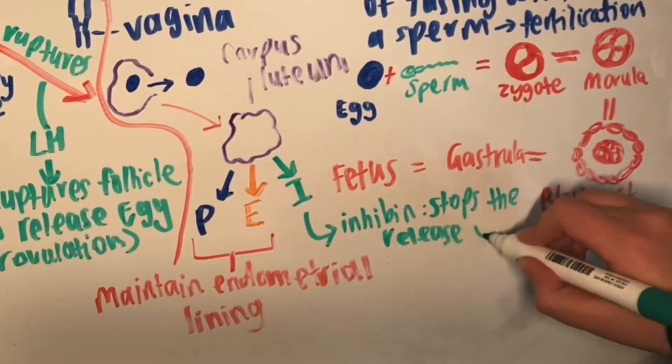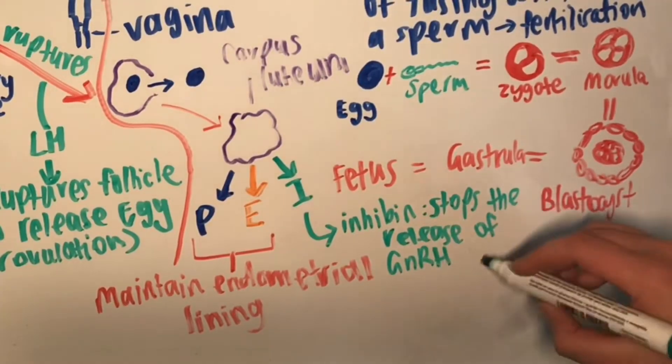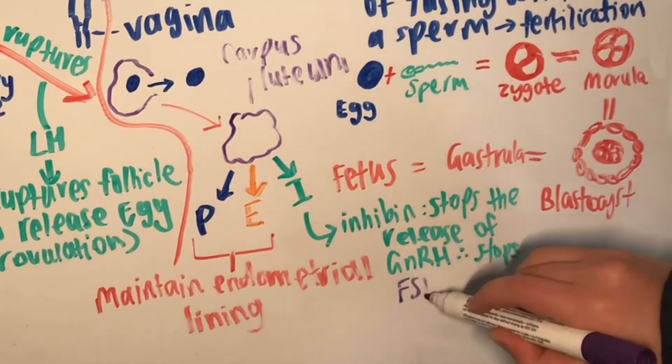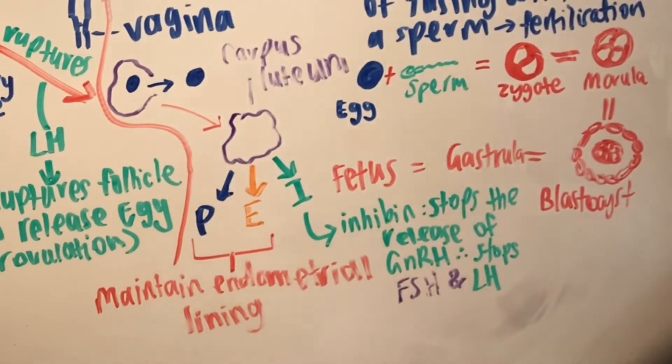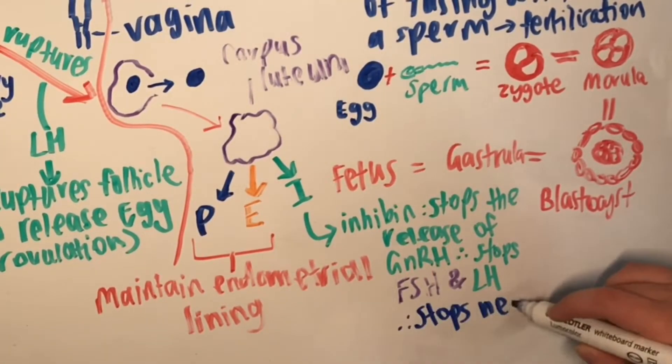Whereas inhibin stops gonadotropin-releasing hormone from being released by the hypothalamus. Therefore, this inhibits FSH and LH and prevents a new cycle from occurring.